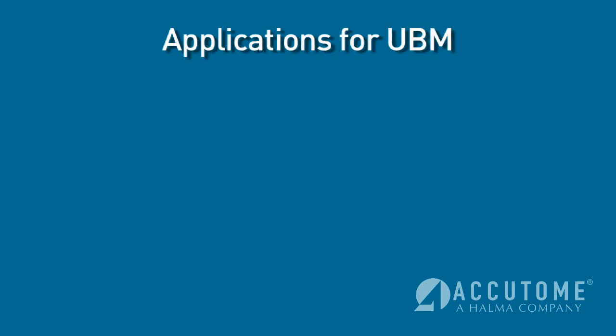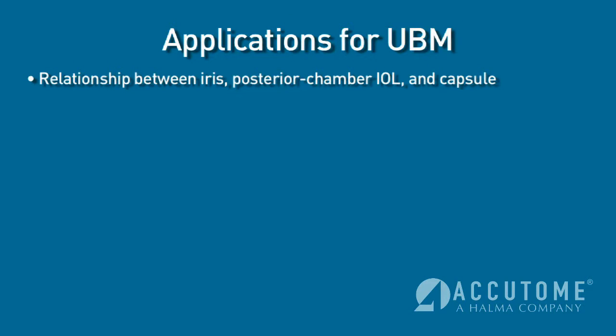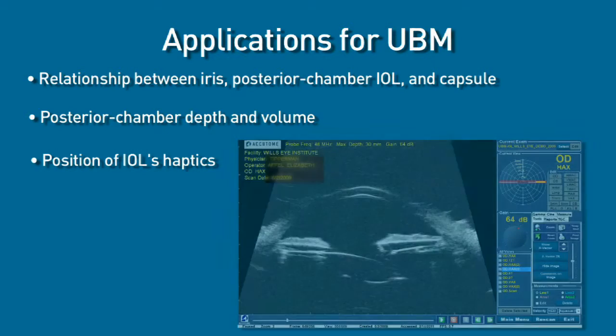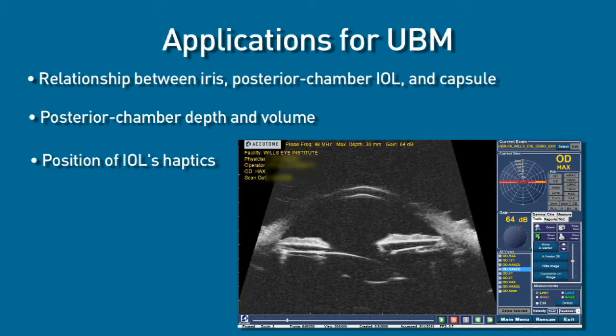I also added a corneal specialist to the practice, and my partner Dr. Fram felt it was essential to have good investigation of the posterior chamber for her pathologic cases as well. We use it particularly to investigate the relationships of anatomic structures in the posterior chamber, looking at posterior chamber depth and volume with regard to lens implants, and the positioning of the lens haptics. One unfortunate complication of single-piece acrylic lens implants is that should one haptic miss the capsule bag, it can rub on the iris and induce manifestation of UGH syndrome.